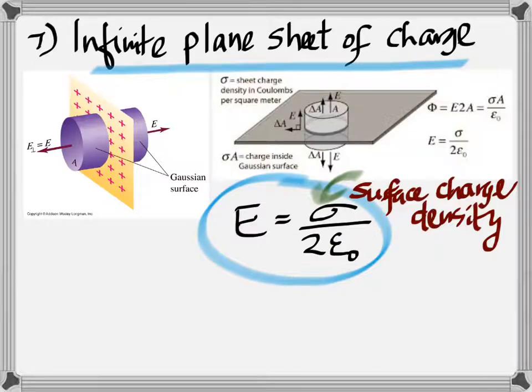Number seven, an infinite plane sheet of charge. You have to assume a cylinder with its faces on either side of the sheet of charge. And as shown here, sigma is the surface density of charge. That means the charge per unit area. It's Q by A. And now, according to Gauss's law,